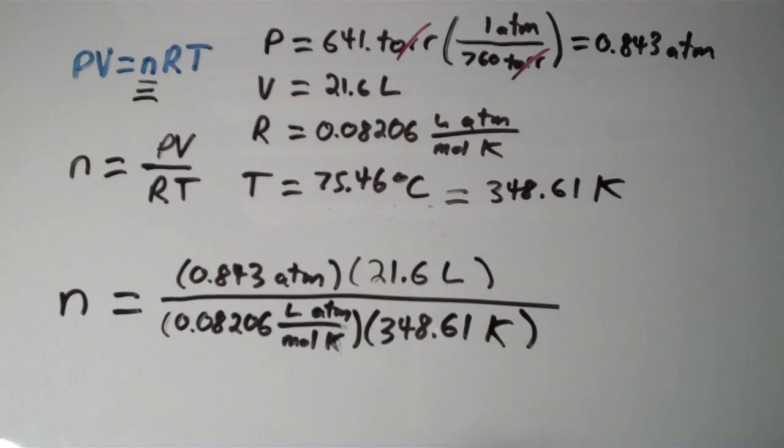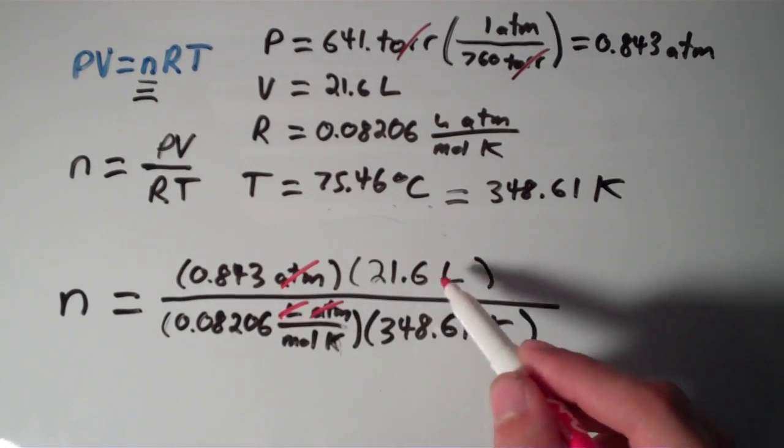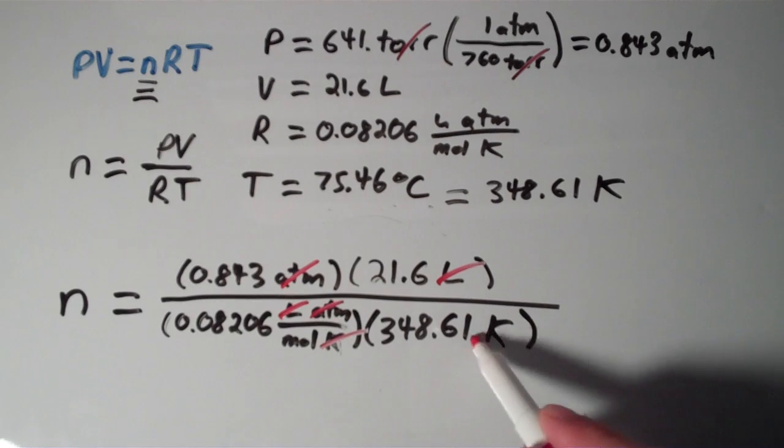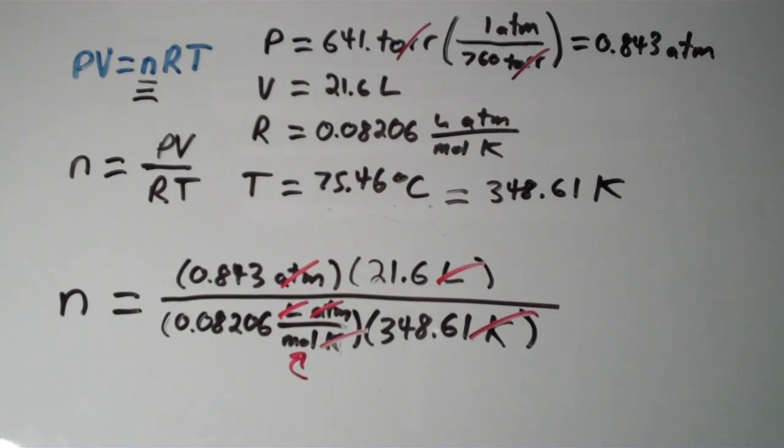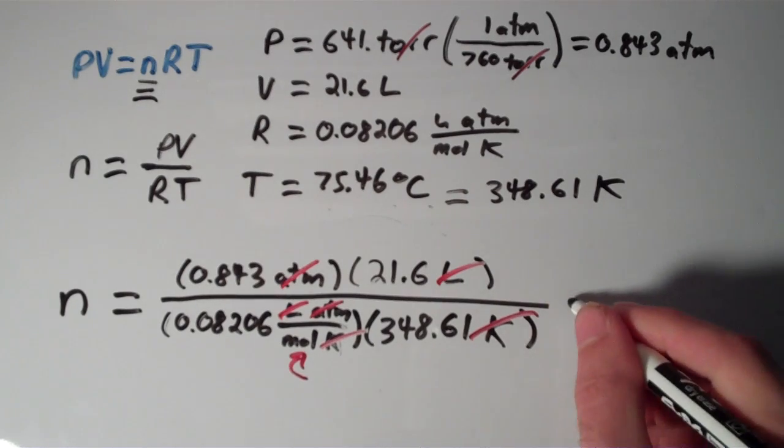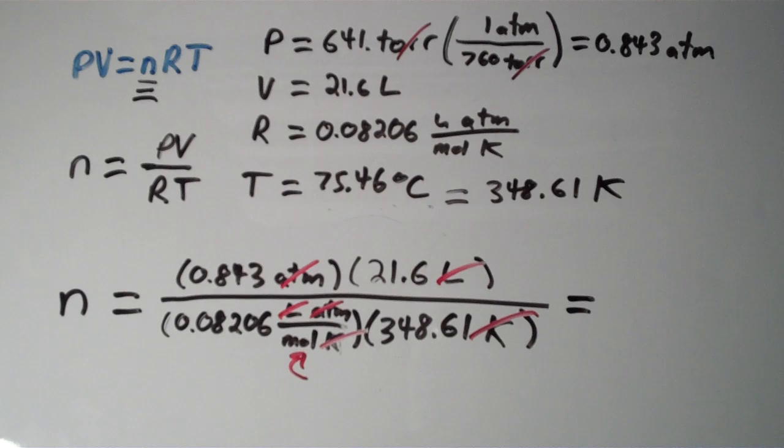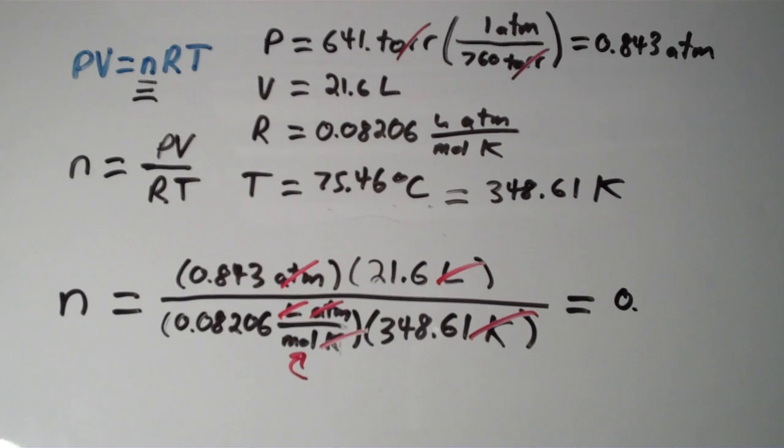And let's just make sure that we end up with moles. Atmospheres cancel, liters cancel, and kelvins cancel. So we end up with nothing but the moles. And it turns out that this number in moles is going to be 0.636 moles.